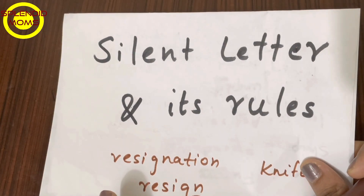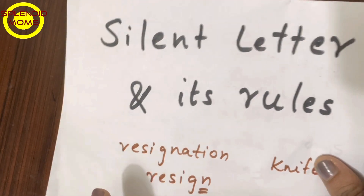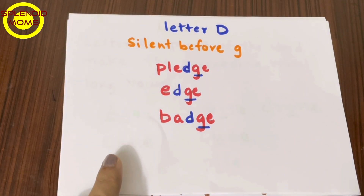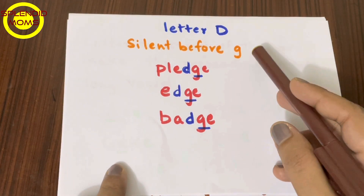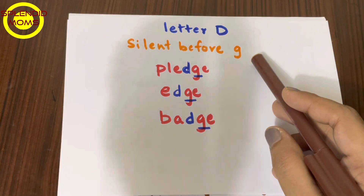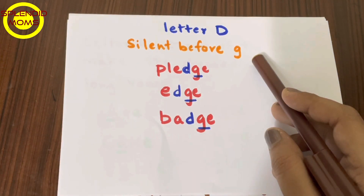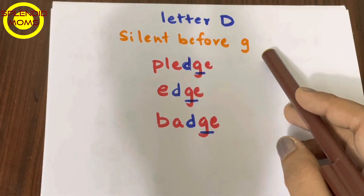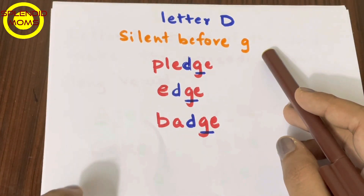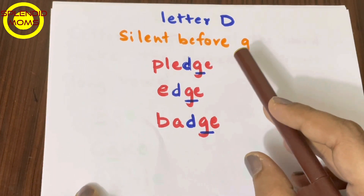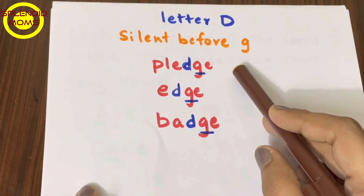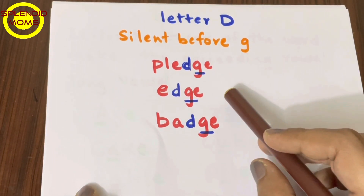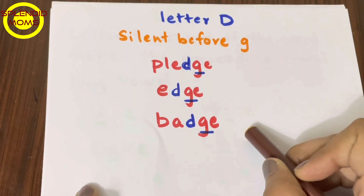Silent letters and its rules. For letter D, it is always silent when it comes before G. Examples: pledge, edge, badge.